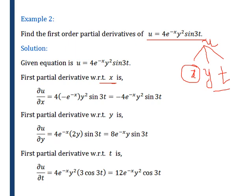So del u by del x equals 4 into minus e raised to minus x. Here, y square and sin 3t are in multiple of this term, so they will remain as they are. Ultimately, the answer is minus 4 e raised to minus x, y square, sin 3t.